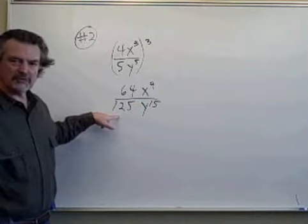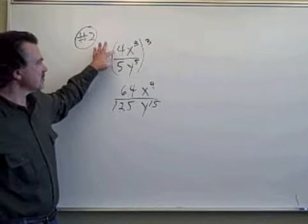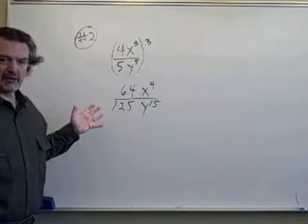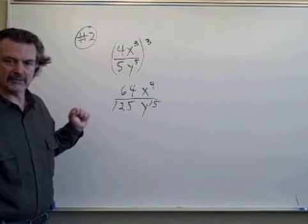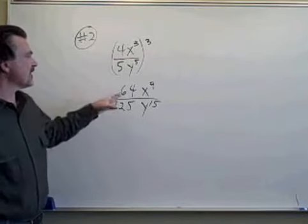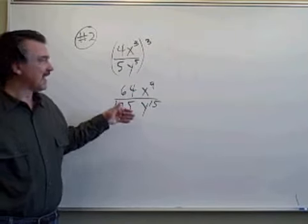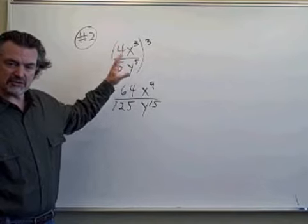64 over 125, I know I can't reduce because I can't reduce 4 fifths. And raising those to a power isn't going to produce a number that I could reduce if I couldn't reduce back here. So there is that quotient raised to the third power. I had to raise both the numerator and the denominator of this fraction to that power, which involved raising each of the factors to that power.